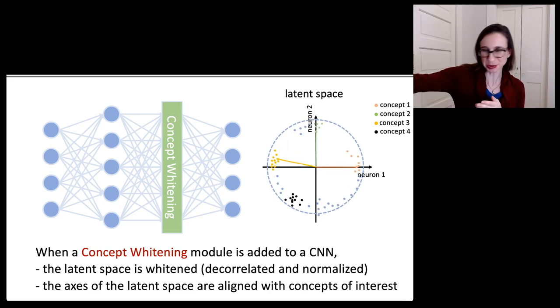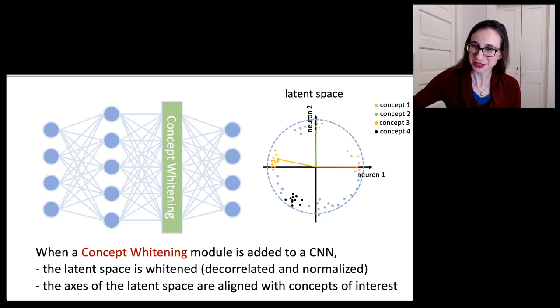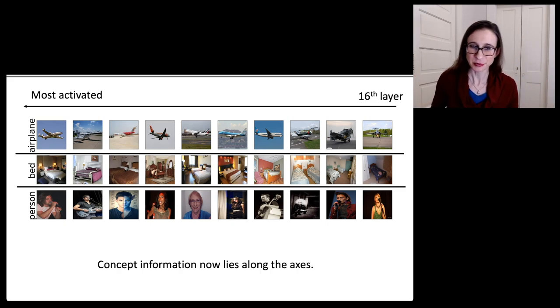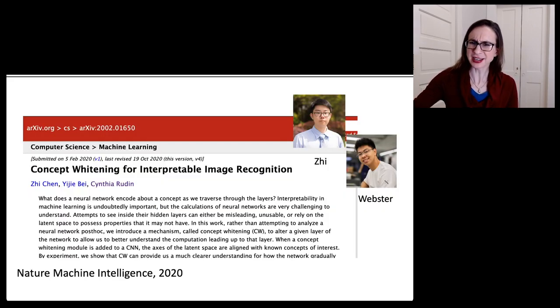And the axes of the latent space become aligned with the concept of interest. So you have like neuron one is the airplane, that's like the airplane axis, and neuron two, its axis represents like cars or something like that. And so you actually then make the space disentangled. And so if you look along the axes, like if you look at the furthest point along the airplane axis, what you see is airplanes. And when you look along the bed axis in the latent space, what you see is beds. It's really cool. And so yeah, it's kind of like principle component analysis for neural networks if you want to think about it that way. It's a lot of nice linear algebra trickery by my students.